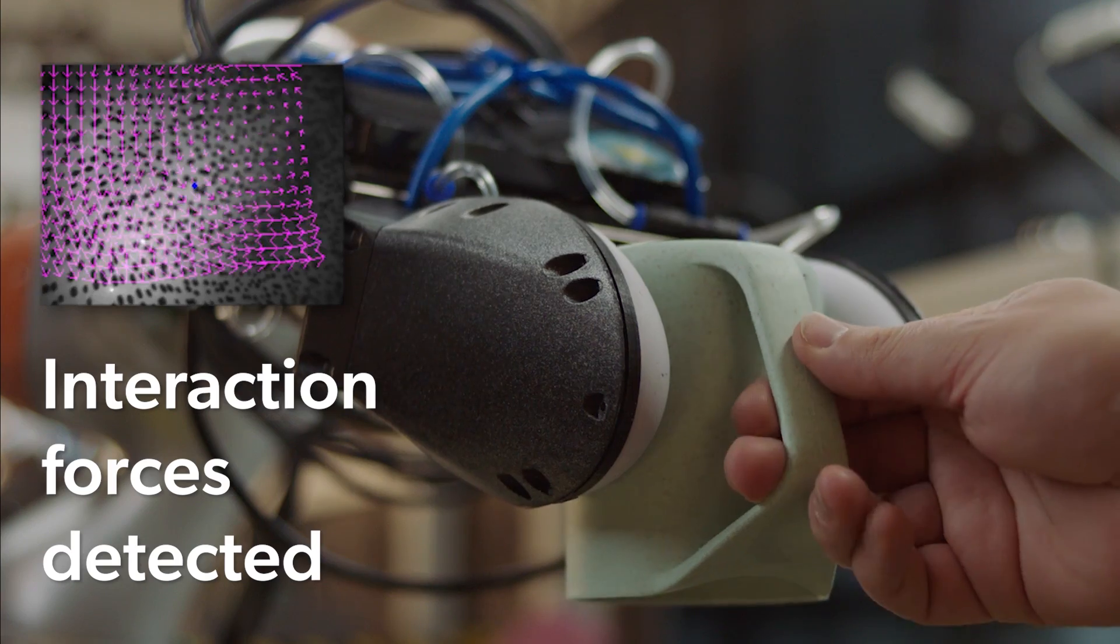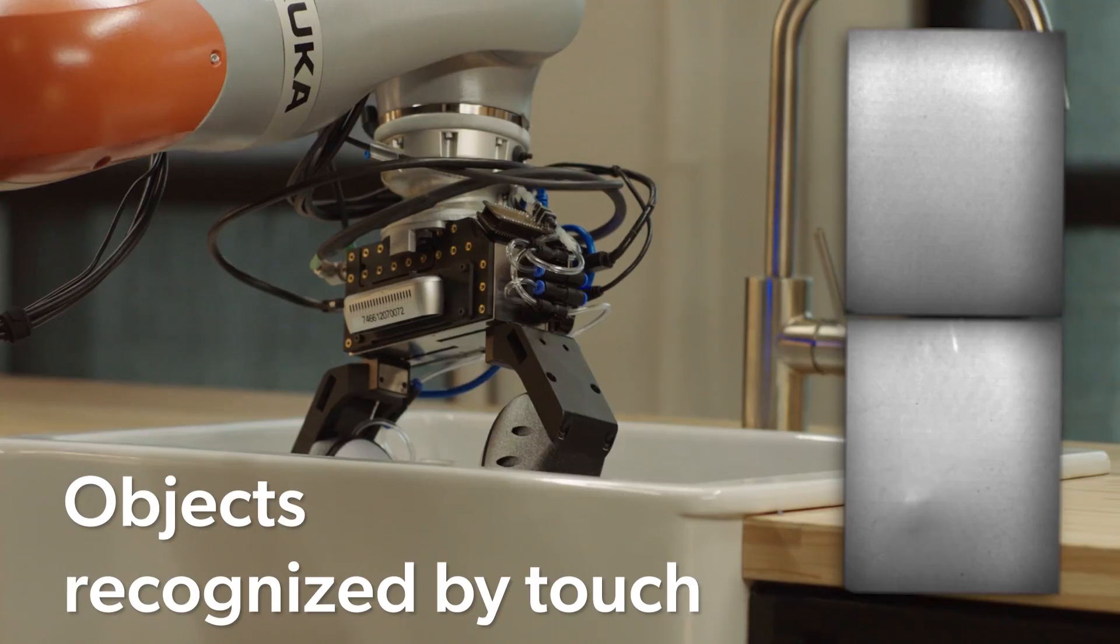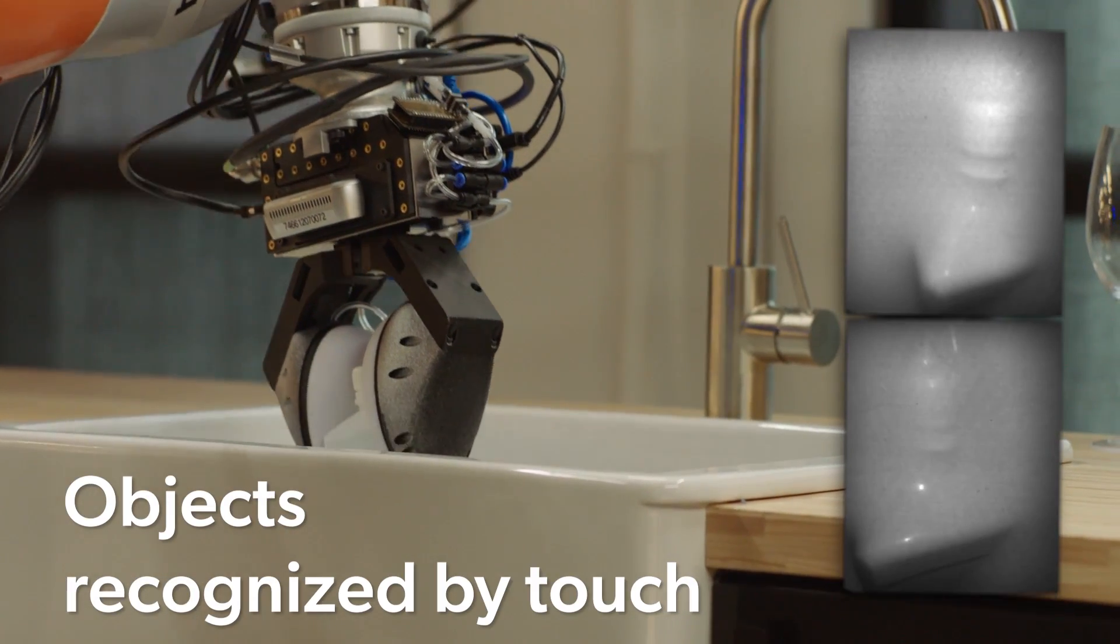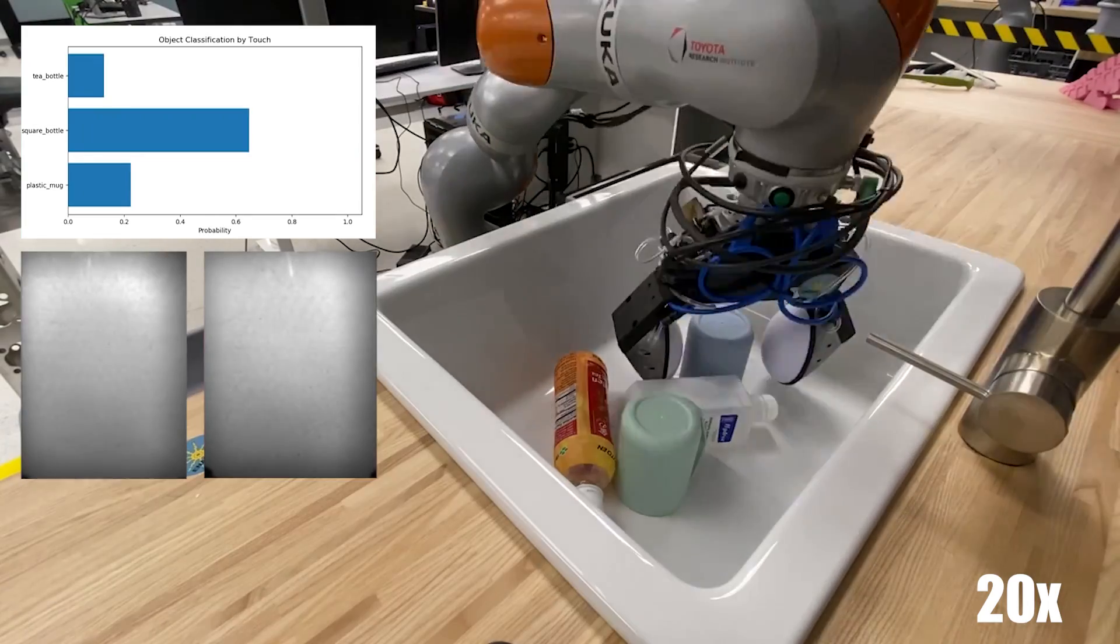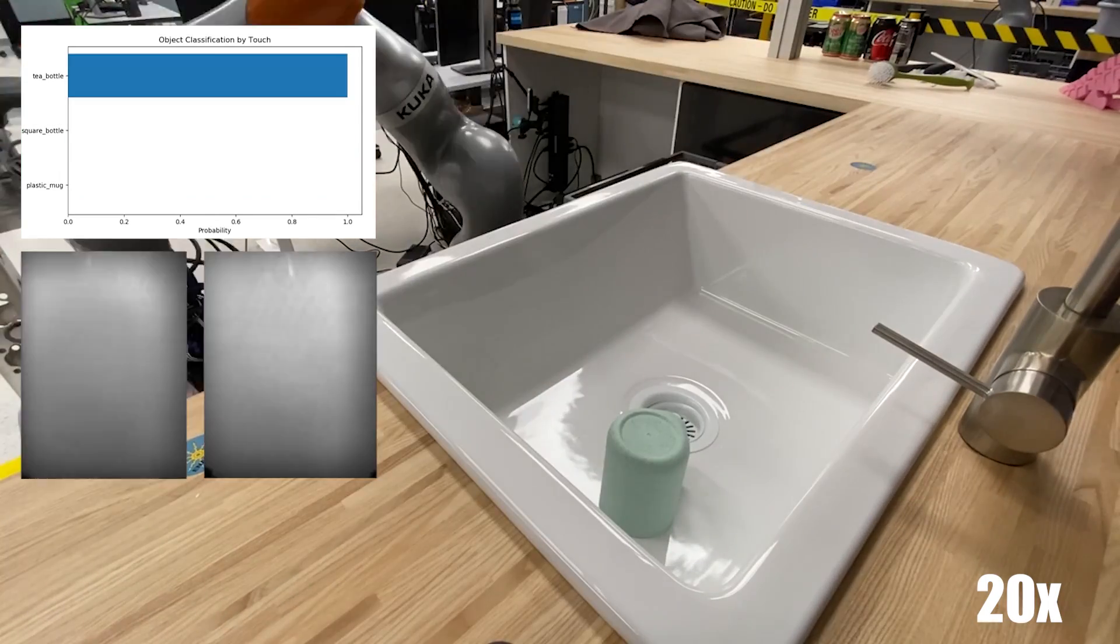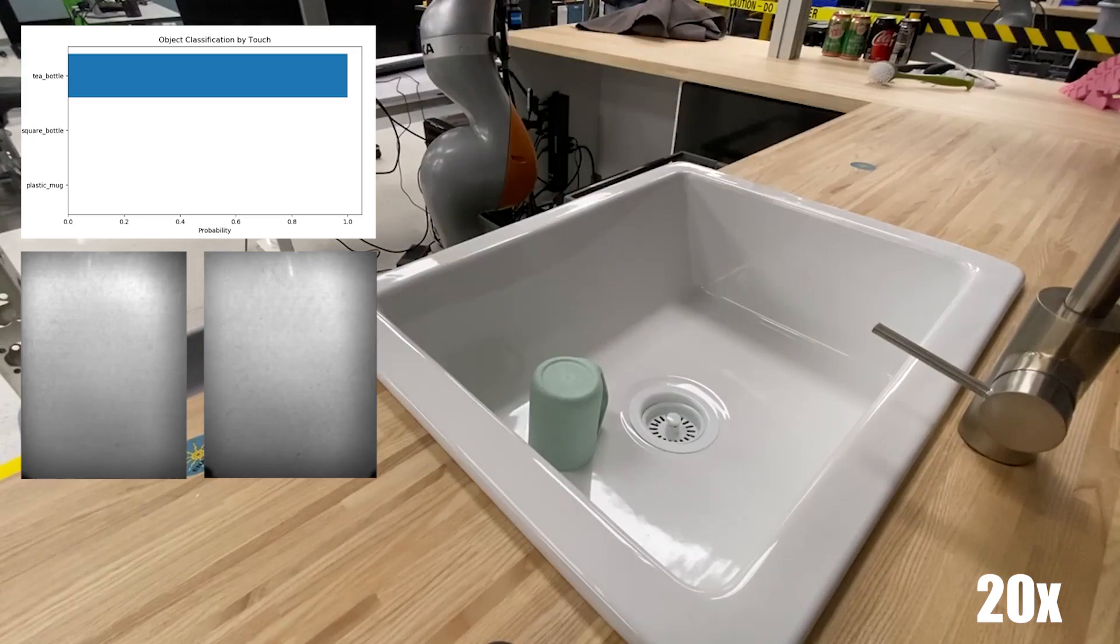This visual-tactile sensor is fully integrated onto a robot performing realistic tasks in a domestic environment. The robot picks objects from a cluttered sink, performs ResNet-trained in-hand object classification, and sorts them to their correct place.